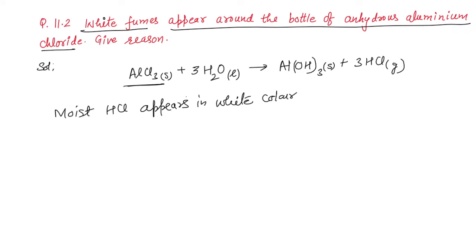Why? Because aluminium chloride is partially hydrolyzed by atmospheric moisture, and it liberates HCl gas. And this HCl gas in moist state appears in white colour. Done. This is question number 11.2. So let us do next question.